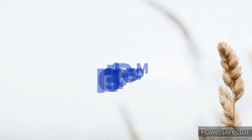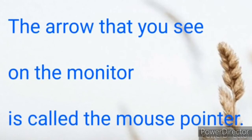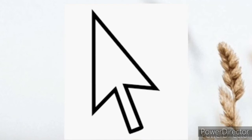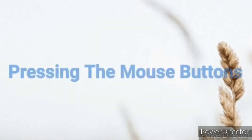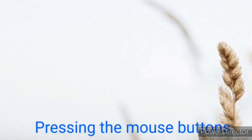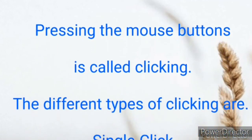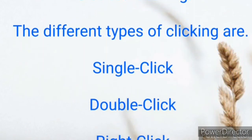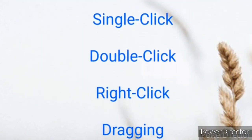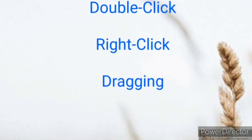Mouse pointer: The arrow that you see on the monitor is called the mouse pointer. Pressing the mouse buttons is called clicking. The different types of clicking are: single-click, double-click, right-click, and dragging.